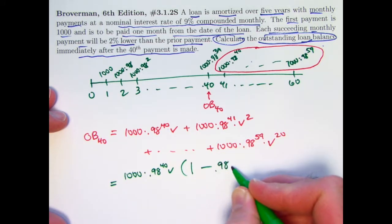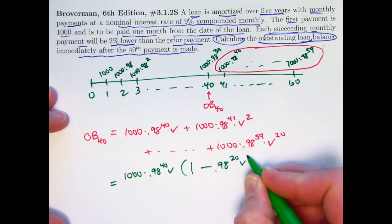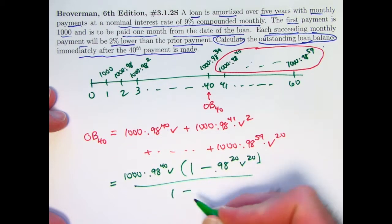So I'll have 0.98 and V, and they both get raised to the 20th power because there are 20 terms in the sum. And then you divide by 1 minus the common ratio, 0.98 times V.